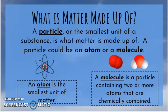Those molecules could be made of two of the same type of atom, like this one here. Or they could be made up of multiple types of atoms, like these here. Or they could be made up of many, many more atoms than just two or three. So an atom is a single individual piece of matter, and a molecule is more than one atom stuck together or chemically combined.